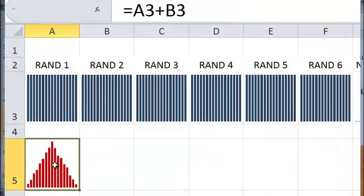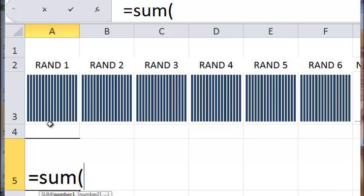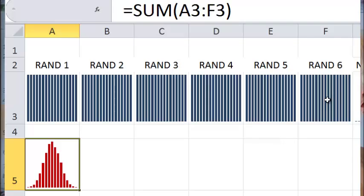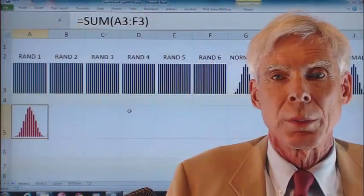Now what happens when I sum all six of those spinners? It gets bell-shaped as predicted by the central limit theorem.